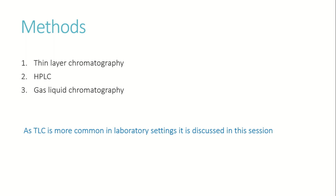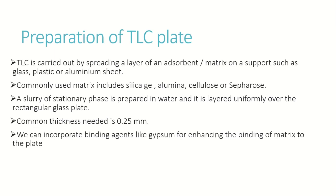In gas liquid chromatography, all lipids are used because it involves high volatility and high temperature. HPLC is common for any type of lipids. TLC is carried out by spreading a layer of an adsorbent or matrix on a support such as a glass, plastic, or aluminum sheet — that is the matrix.